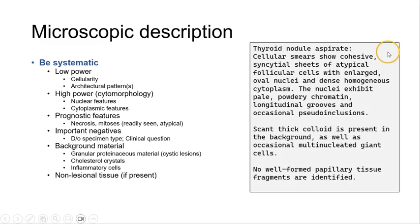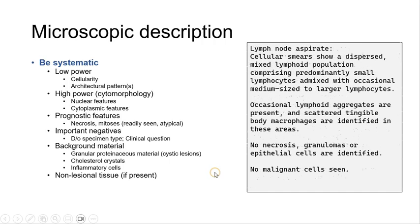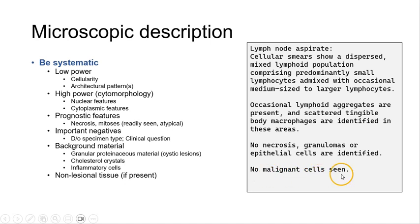Here is a sample report of a thyroid nodule, where we have reflected cellularity, architecture, cytomorphological features, specific diagnostic features, background material, and any relevant negatives. Here is an example of a report from a lymph node aspirate — again, cellularity, architecture, cytomorphological features, other relevant diagnostic features, and important negatives. Usually, if I don't see malignant cells, I would include the line 'no malignant cells seen' in a report where I have definitive diagnostic findings.